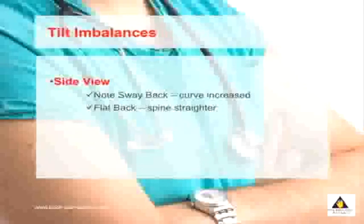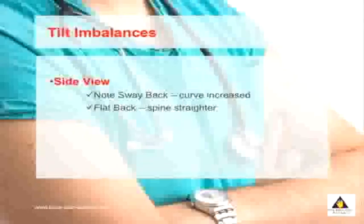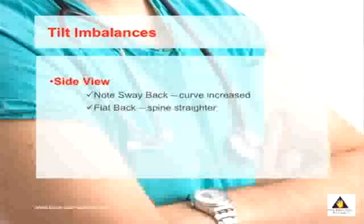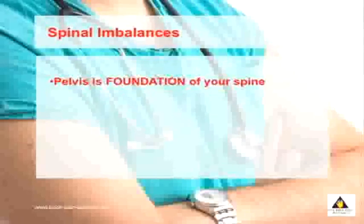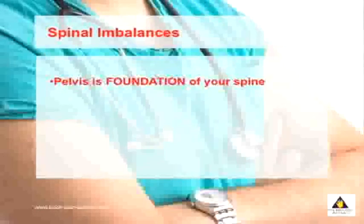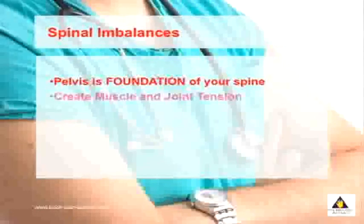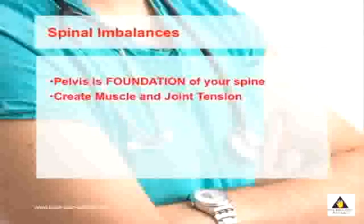You can also look at the side view of your posture, and this detects what's called a tilt type imbalance, where you can have a sway back where the curve in your lower back is a lot greater, or you may have a flattened spine. The pelvis is the foundation of your spine, and imbalances centered around here can create pain throughout your spine, causing both muscle as well as joint tension.